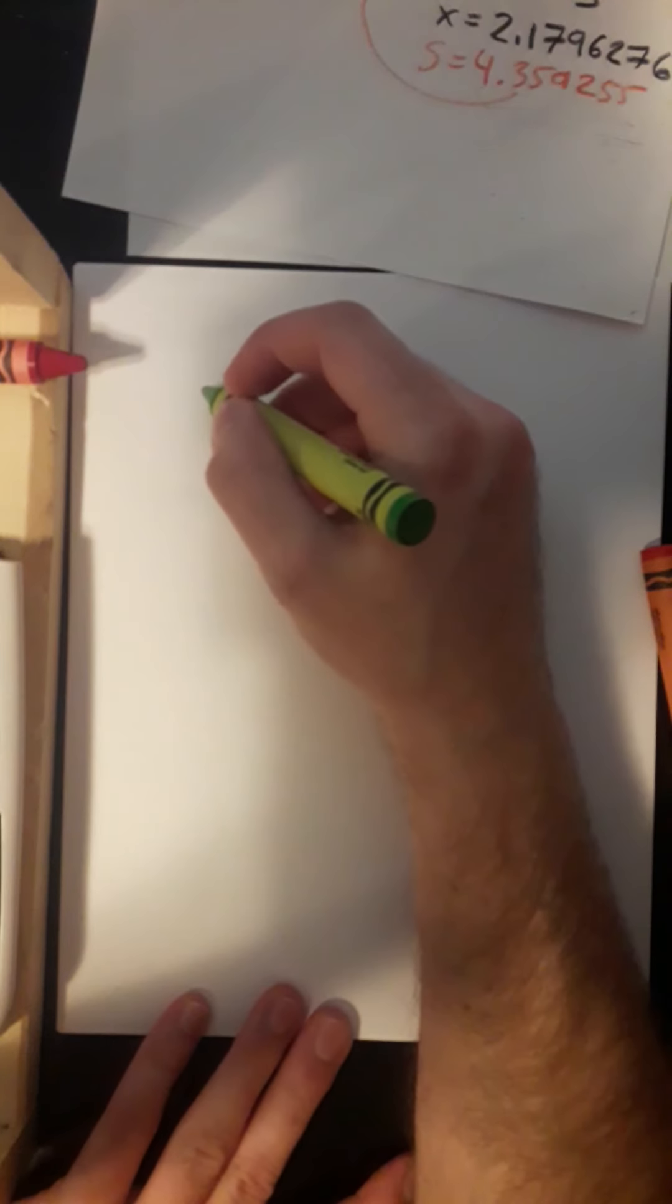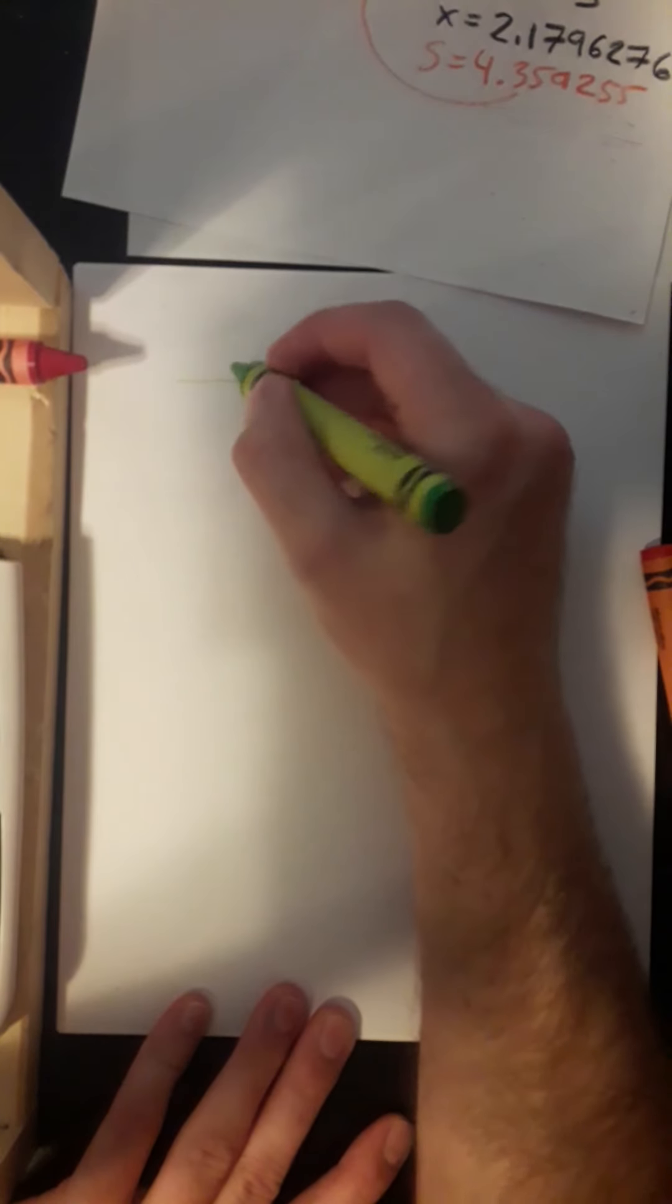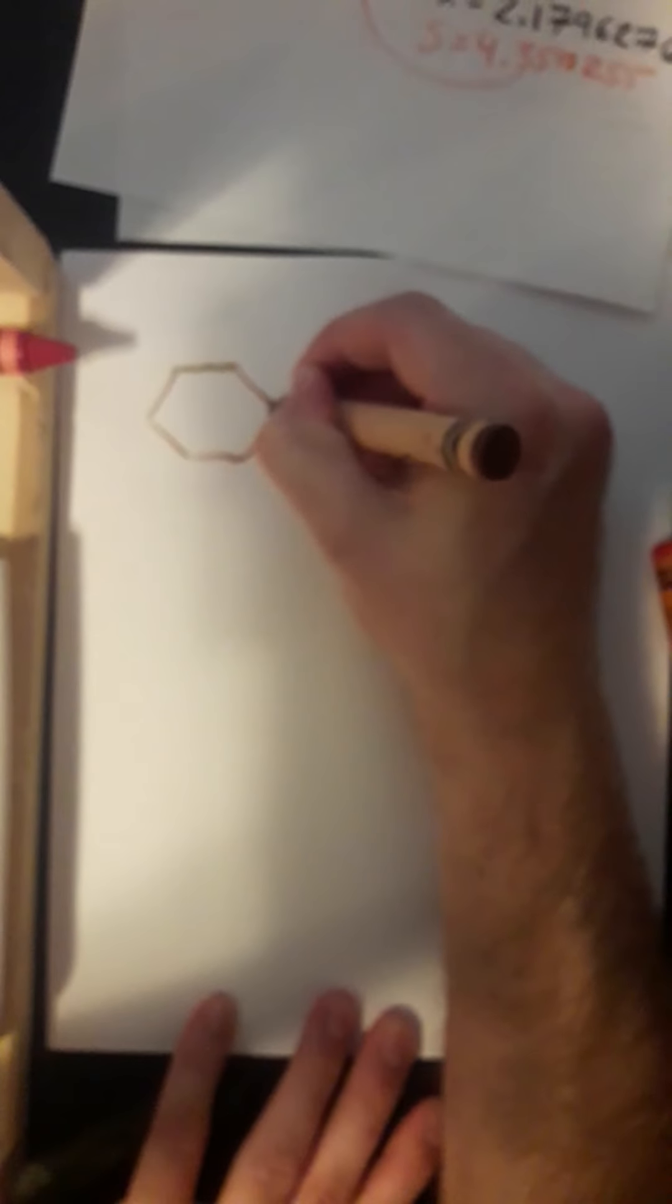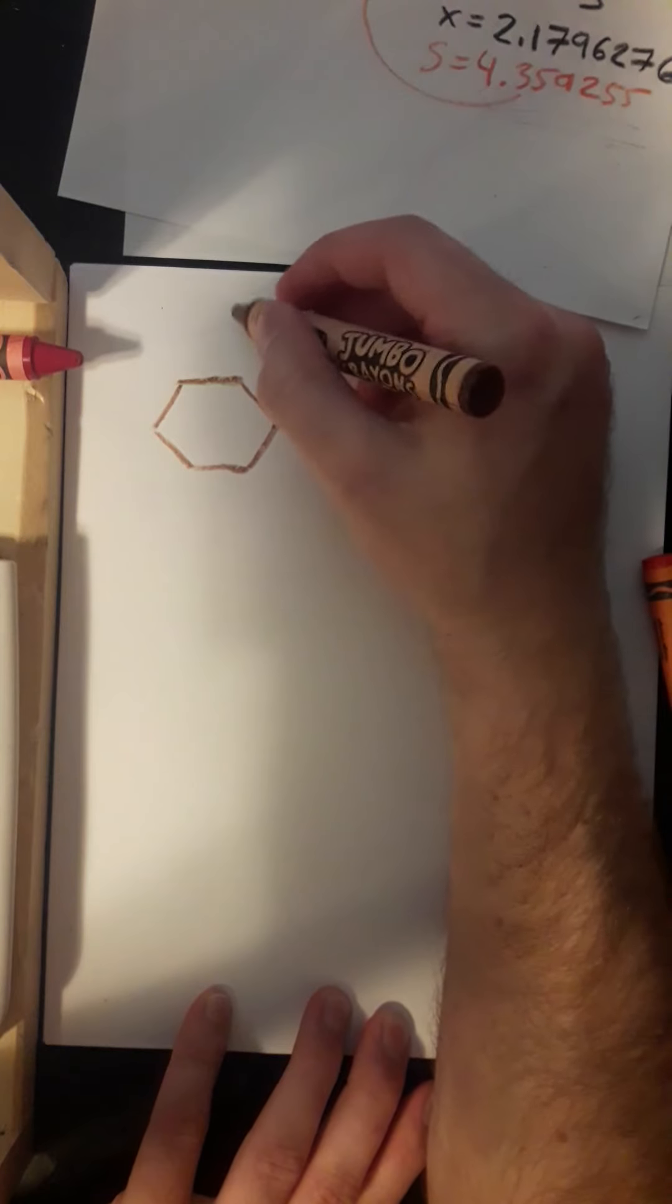Let's do an example with a hexagon. Let's go with brown. Okay, so let's say they give you a hexagon and they want you to find the area of the regular hexagon.